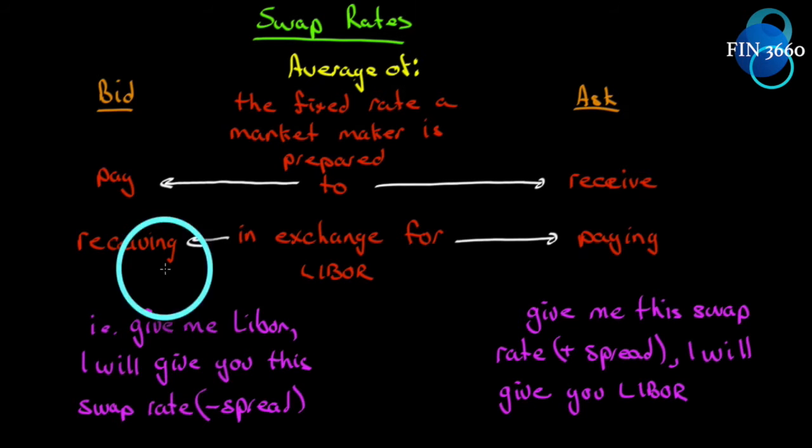What the market maker is saying when we look at the bid is, give me LIBOR and I will give you this swap rate minus the spread. The swap rate is the average of the two. So if you give me LIBOR, I am prepared to give you the swap rate minus the spread, the bid. On the ask, it's saying, if you give me the ask, which is the swap rate plus the spread, I will give you LIBOR.